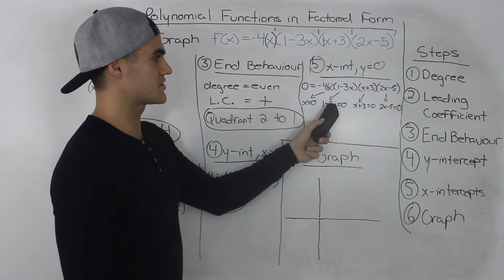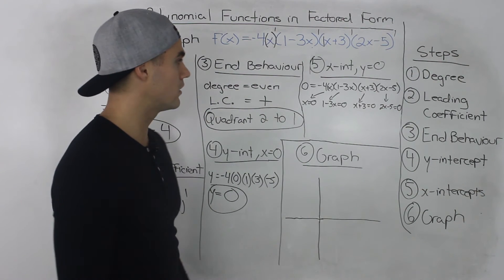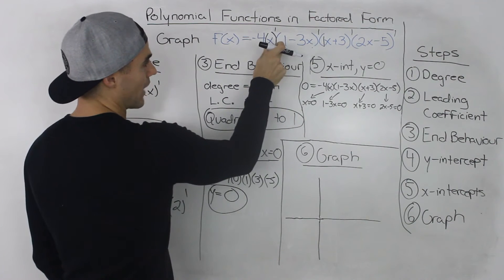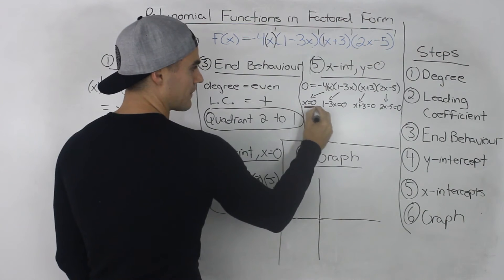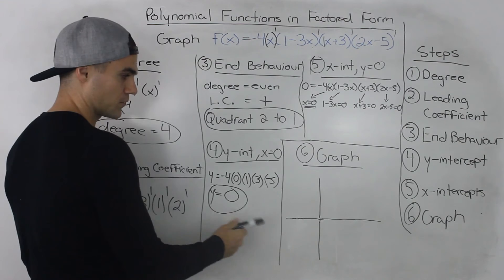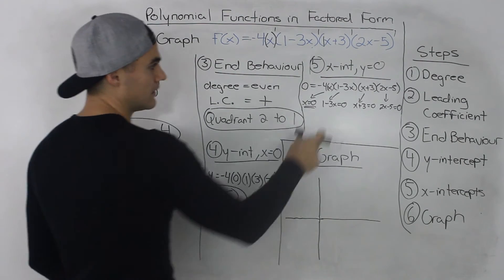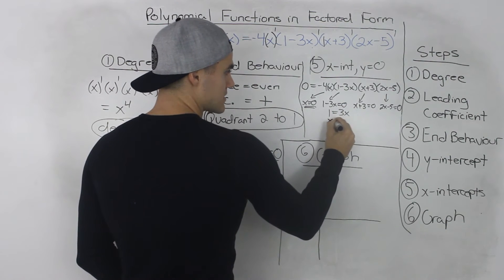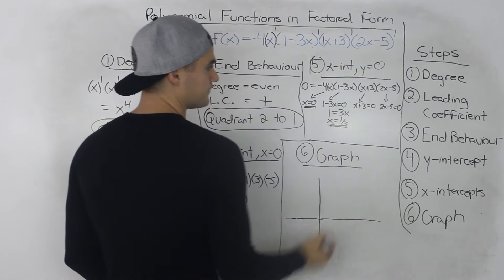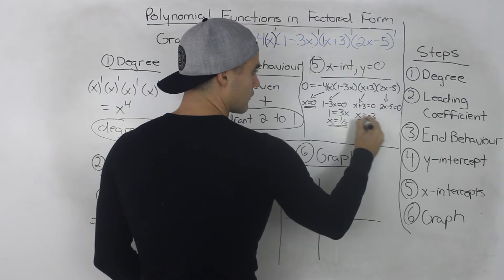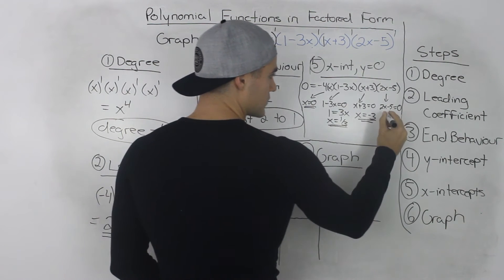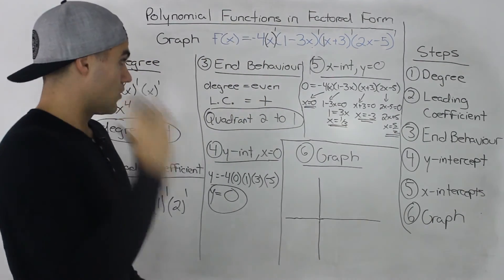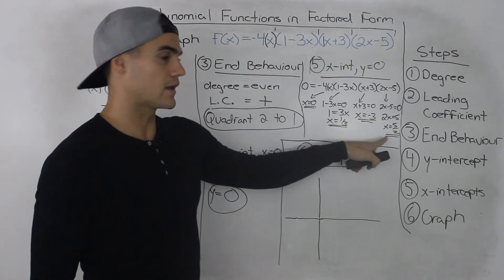Step 5: X-intercepts. We set the polynomial equal to 0 and find when each bracket equals 0. The bracket with x alone equals 0 when x equals 0. For 1 minus 3x equals 0, isolating x gives x equals 1 over 3. For x plus 3 equals 0, x equals negative 3. For 2x minus 5 equals 0, x equals 5 over 2. So our four x-intercepts are 0, 1/3, negative 3, and 5/2.